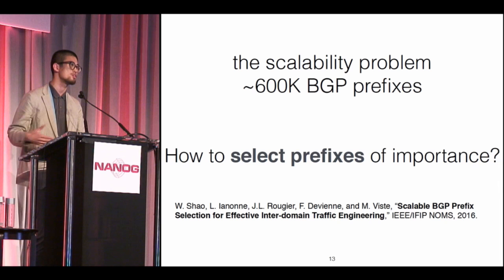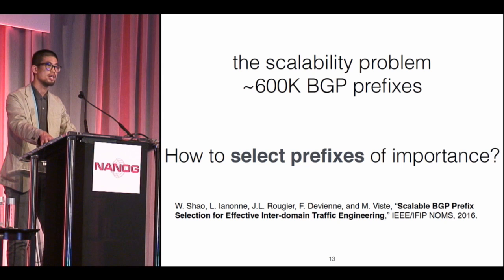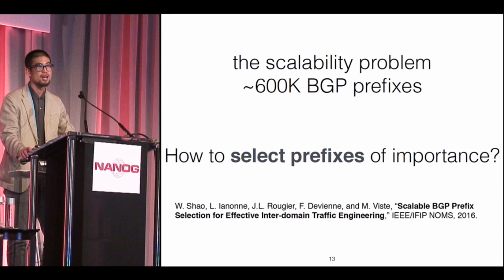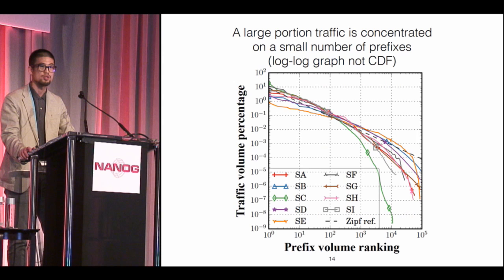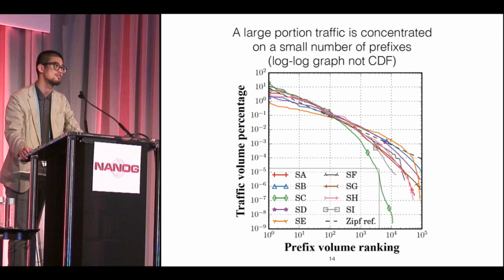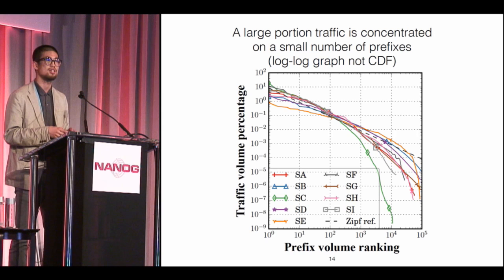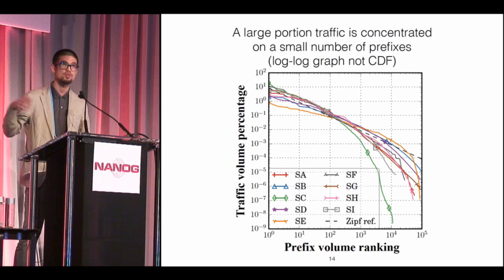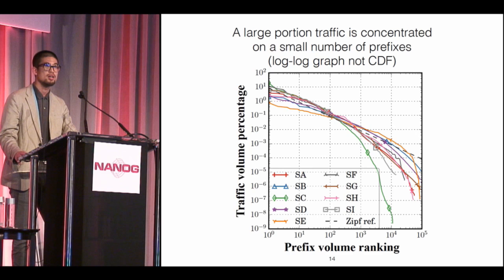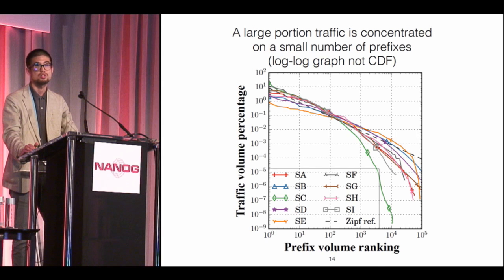As I mentioned earlier, the purpose of collecting traffic volume statistics is to allow us to select a subset of prefixes of volume importance. The reason is that we just can't afford monitoring all 600K BGP prefixes, and there's no need to do so. We know that a large part of internet traffic concentrates on a small part of prefixes. For certain networks, the top prefixes can stand for up to 10% of total traffic volume, and with the top thousand prefixes over a week, it covers 90% of total traffic. By optimizing for these destination prefixes, we control and optimize a large part of total volume.